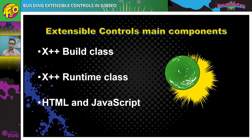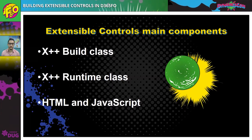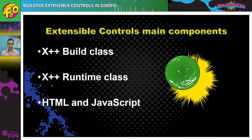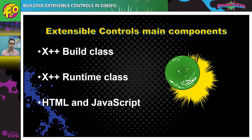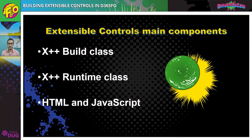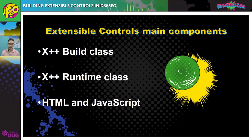The second component is the X++ runtime class. This allows the developer to define all the data patterns and server-side business logic that, once serialized into the JavaScript view model, allows us to consume properties and commands from the HTML and JavaScript parts of the control. The third component is the HTML and JavaScript, which define the control visualization and client-side interaction patterns that, along with jQuery and the Microsoft Dynamics HTML binding syntax, create a powerful channel of communication back and forth between the server and client.